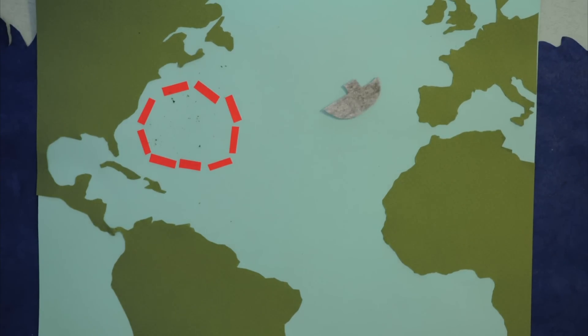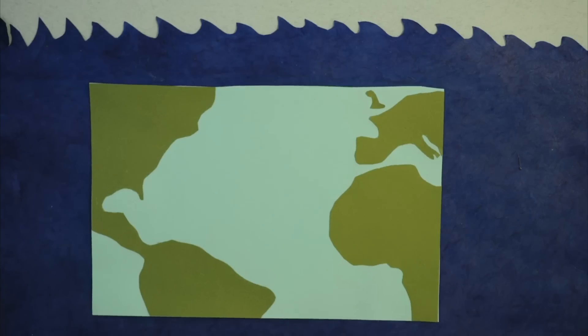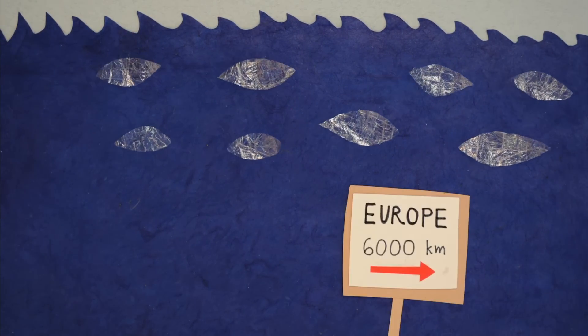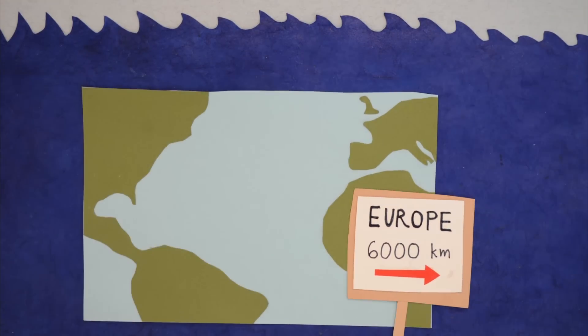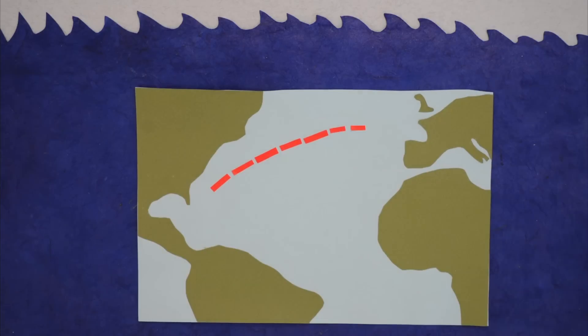The larvae here were so tiny, less than a centimetre long, that Schmidt was convinced they could not have originated anywhere else. Eels begin their lives as eggs in the Sargasso, rising from the depths toward the light of the surface. They hatch into transparent larvae shaped like willow leaves and are carried towards Europe on ocean currents.